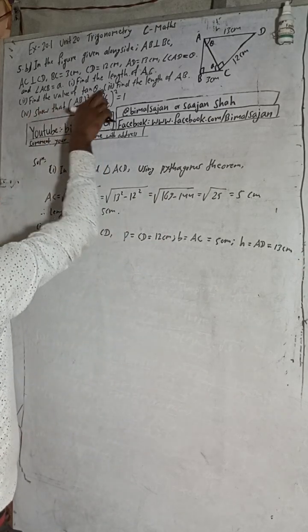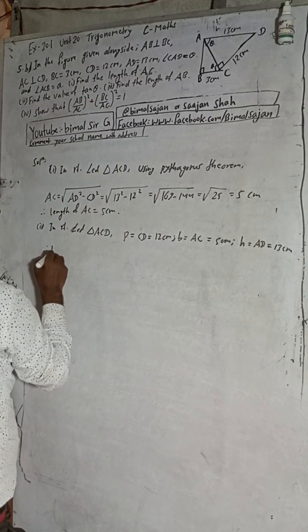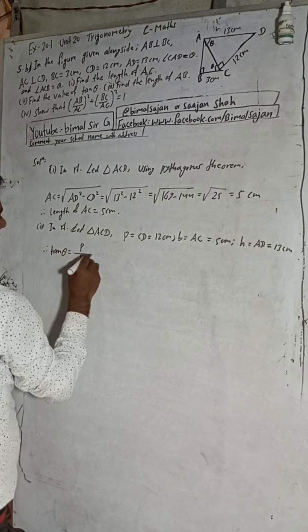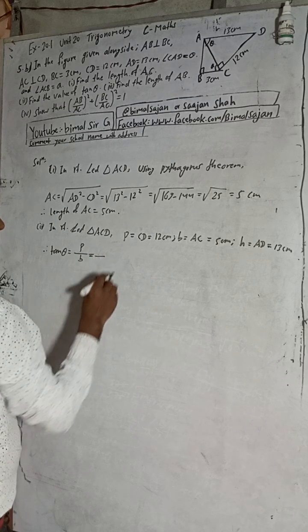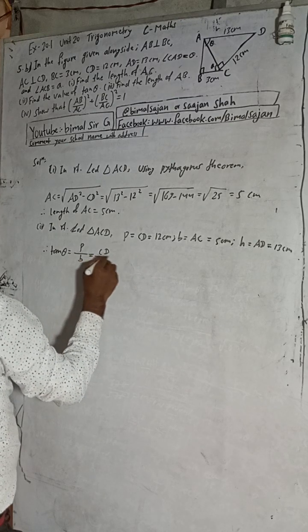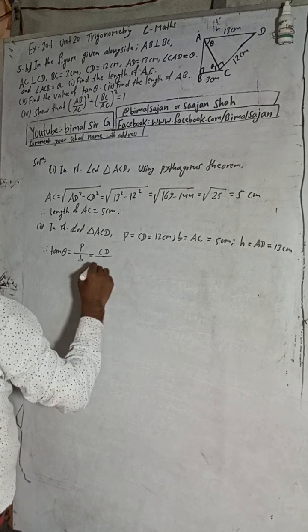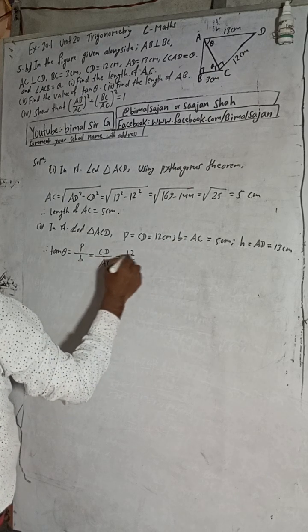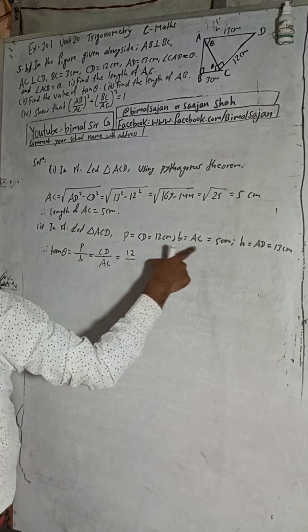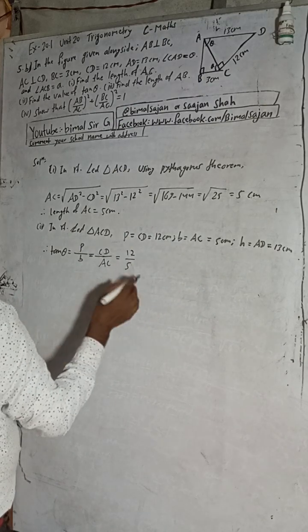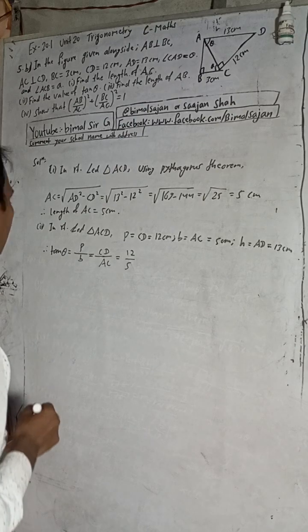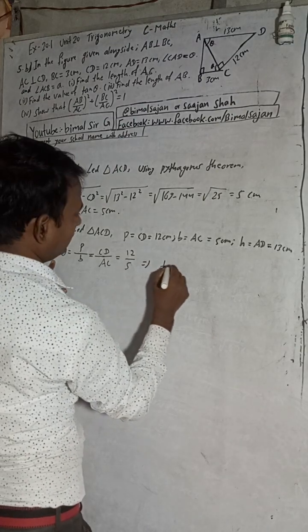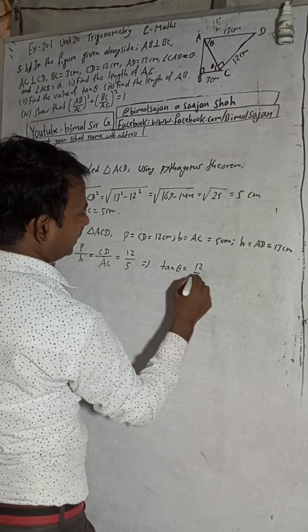To find tan theta: tan theta equals perpendicular by base, which is P by B. Our perpendicular is CD and base is AC. So we can write perpendicular value 2 by base value 5. Therefore, tan theta equals 2 by 5.